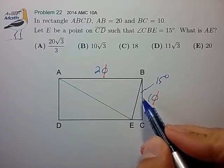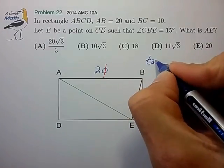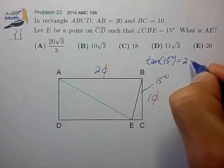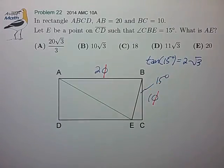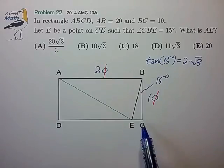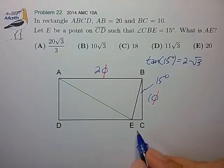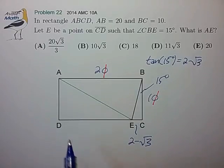Now we know from the previous video that the tangent of 15 degrees is 2 minus root 3. So now we can quickly calculate the side length EC as 1 times the tangent, 2 minus root 3.